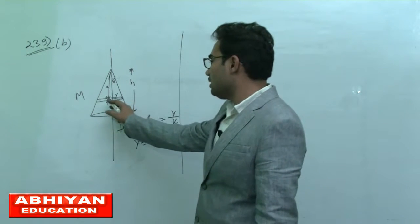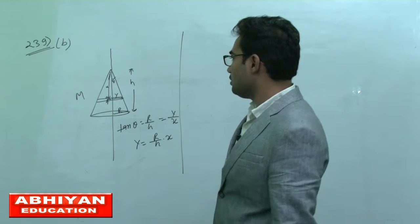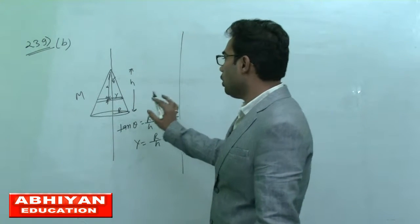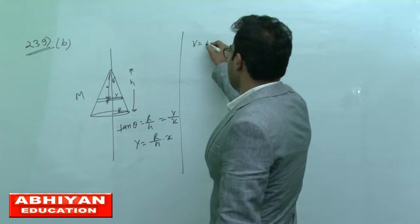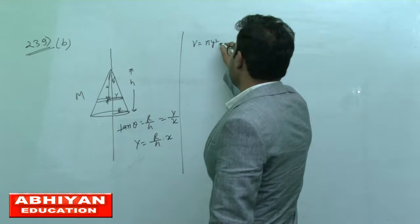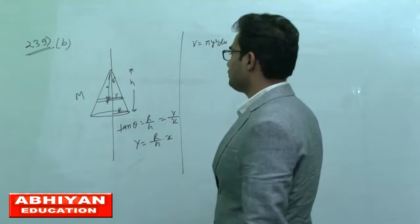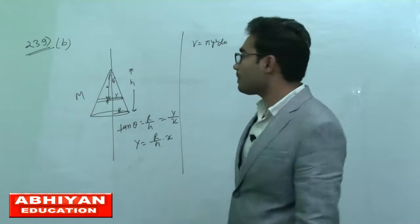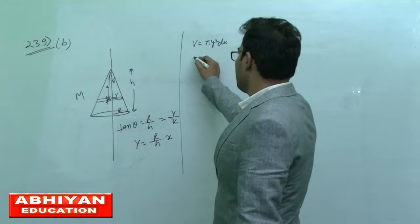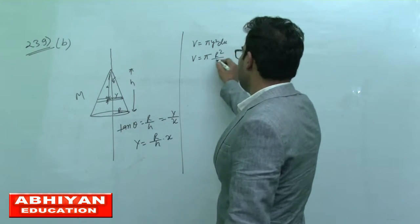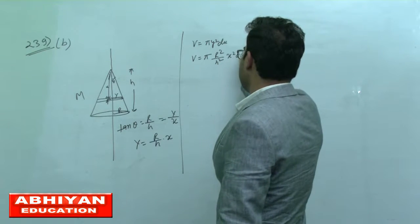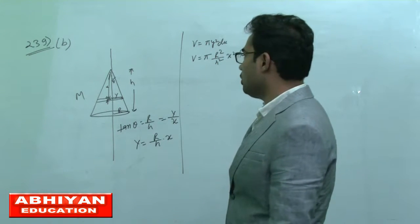The disc's width is dx. The volume of this disc is pi y square dx. Putting y equals R by H times x, we get pi R square by H square times x square dx. This is the volume.